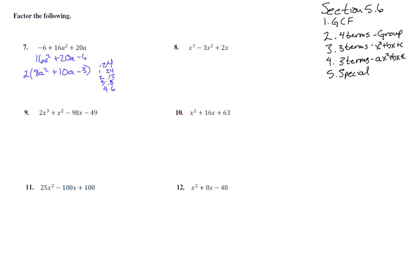8 times negative 3 is a negative 24, which we could have 1 and 24 could times to that, 2 and 12, 3 and 8, or 4 and 6. And it's negative, so they've got to be opposite signs. We've got to add to a positive 10.